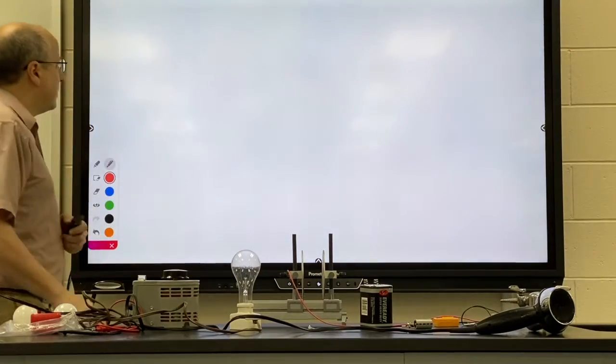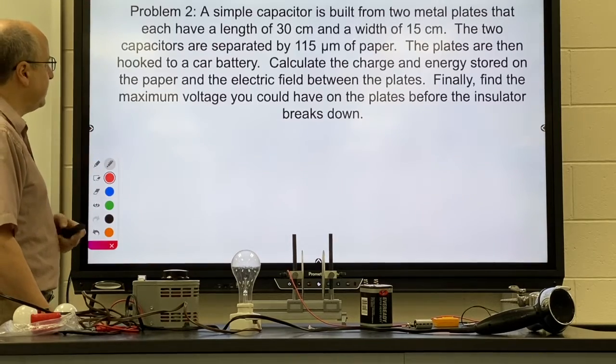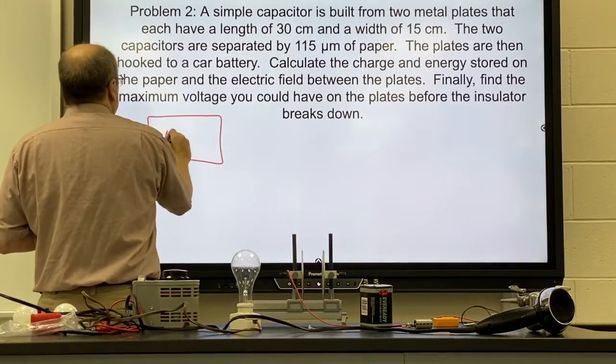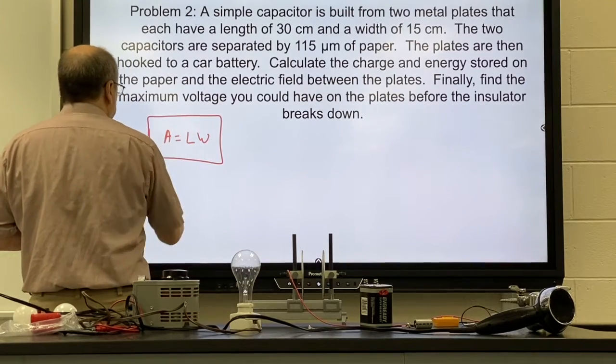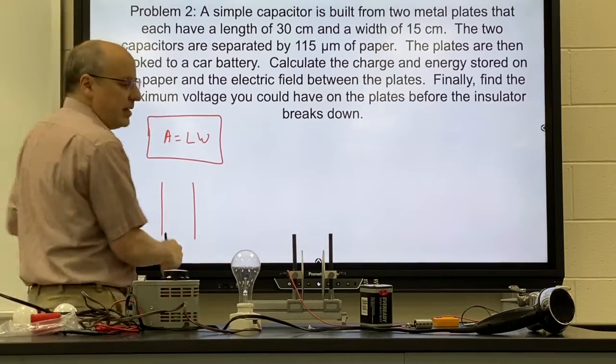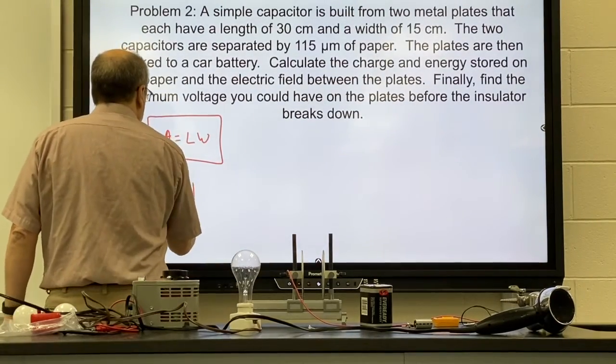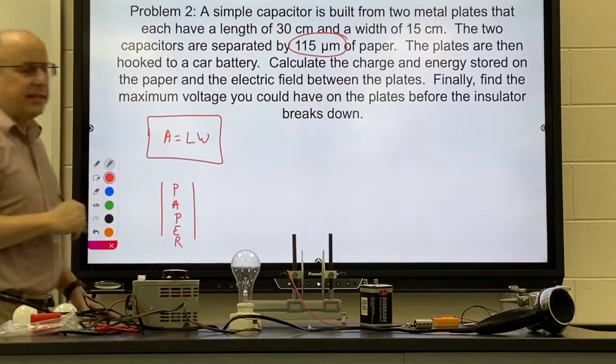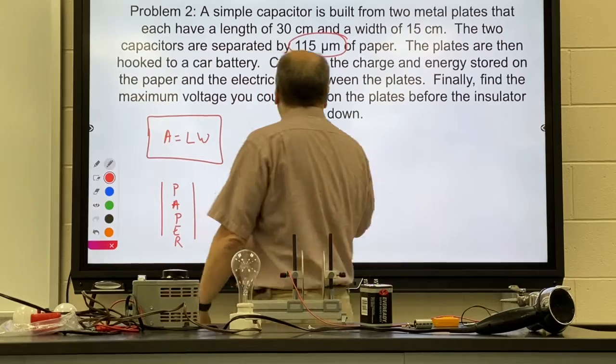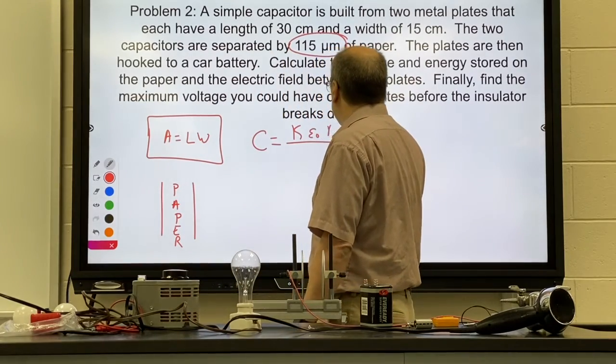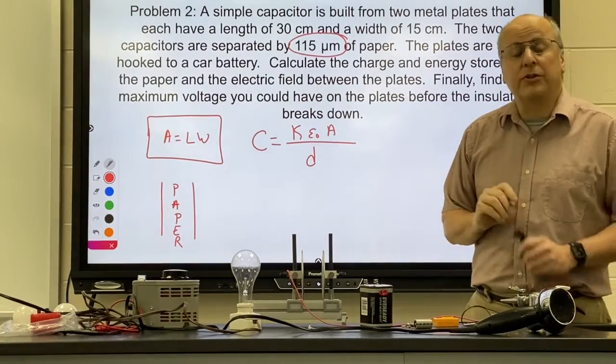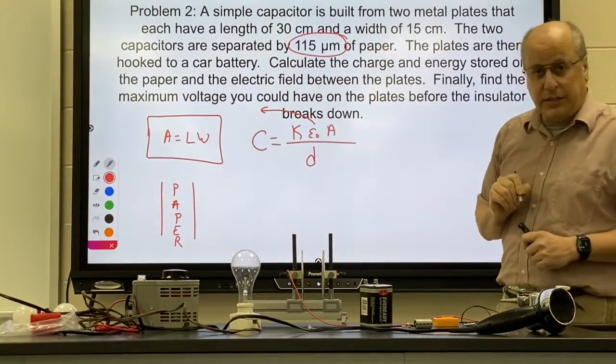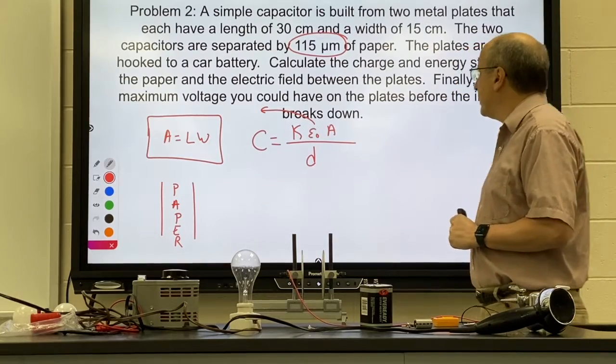Now you're going to build a capacitor out of some metal plates. You're going to find the area of the plates. Make sure you're working in meters. Then you're going to separate the plates by a certain distance and you're going to put a piece of paper in between. Make sure you turn that distance into regular meters. So then you'll use your formula. Look up the K value for paper. It's on your dielectric information sheet. Remember your ε₀ is on your physical constant sheet. Area in meters squared, distance in meters.